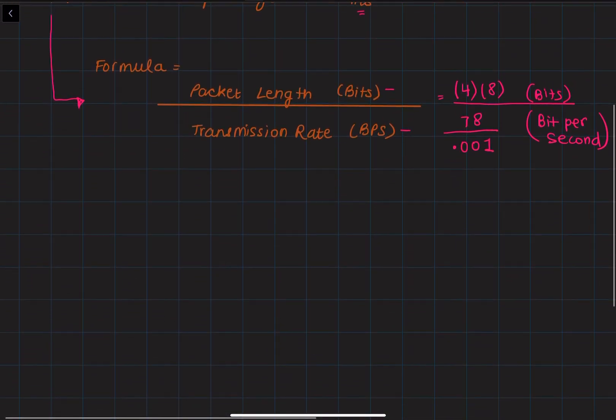This gives us 32 divided by 78,000, which equals 0.004102 seconds, which equals 0.4102 milliseconds. After rounding, this is approximately 0.41 milliseconds.